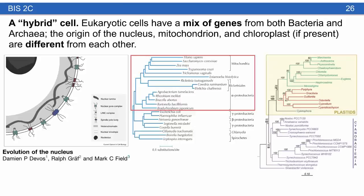A central idea is that eukaryotic cells are kind of hybrid — a mix of genes from both bacteria and archaea. The origins of the nucleus, mitochondria, and chloroplasts are completely different from each other and have their own histories. Nuclear pores often correlate strongly with archaeal genes, the mitochondria originated from alpha proteobacteria, and in plants the chloroplast is of cyanobacterial origin. Eukaryotes are chimeric hybrid cells.